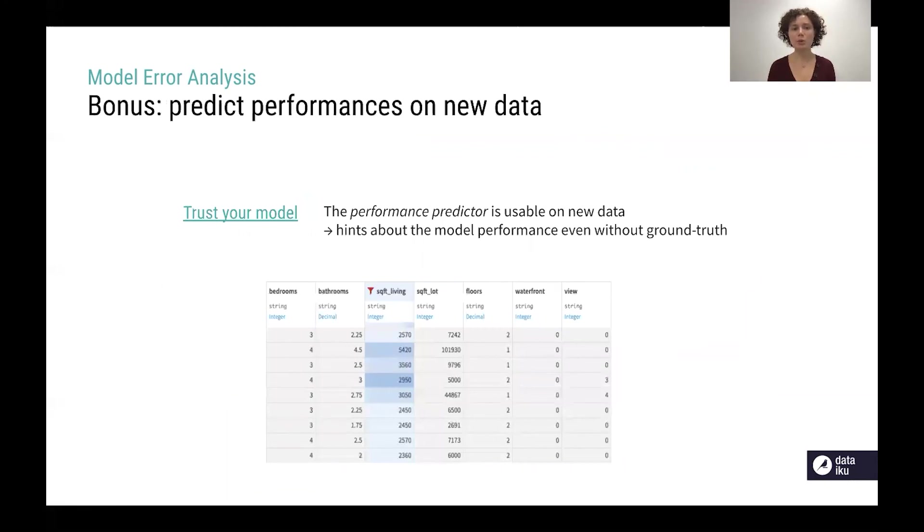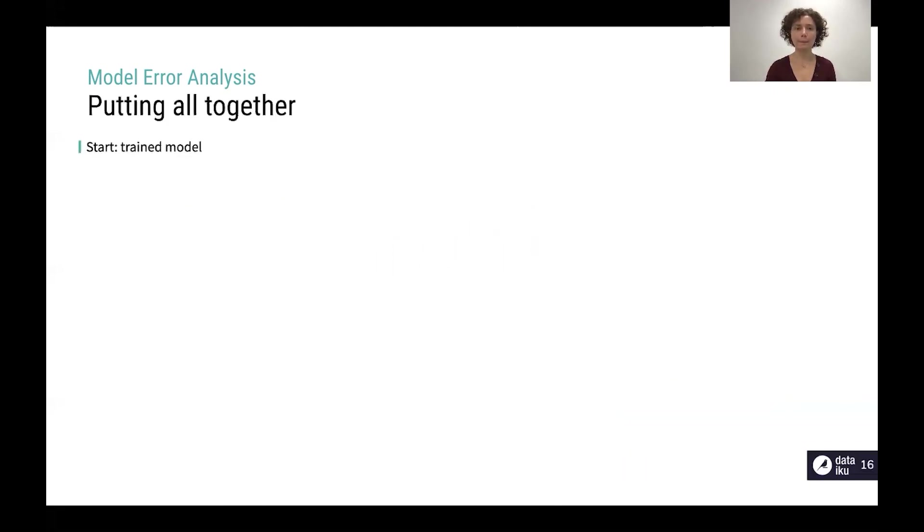Also you must be aware that actually a model performance predictor is a predictor of performances so you can also use it as a model on new data that is not labeled and you could get hints about your primary model performance on this new data. Like for instance in this example you could say hey look those observations your model will probably fail here and this is useful information.